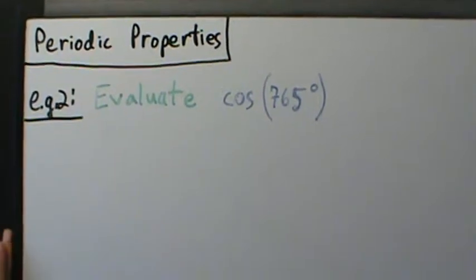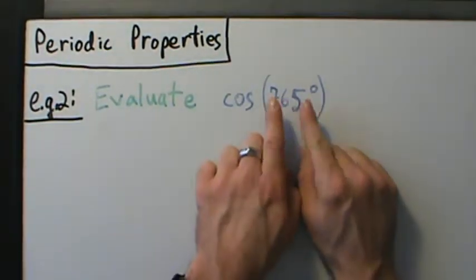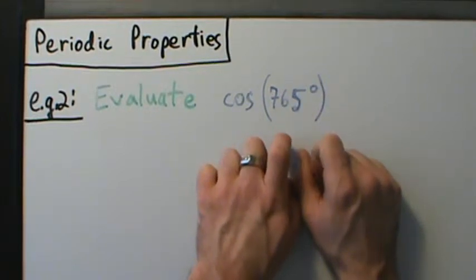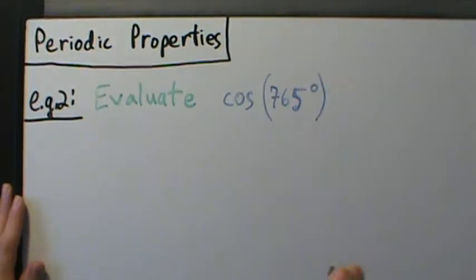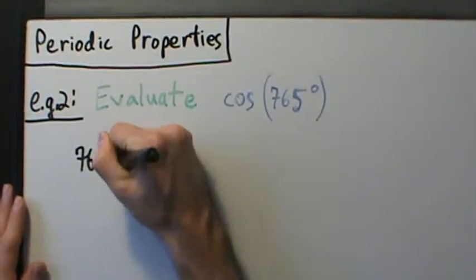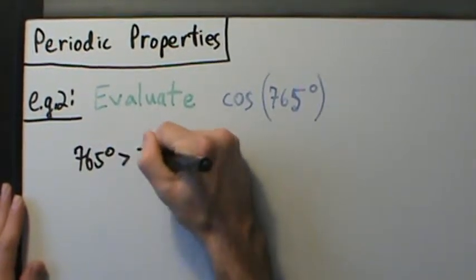So what we have to do first is ask ourselves, is this angle larger than 360 degrees, or is it smaller than 0 degrees? Well, clearly it's larger than 360 degrees, right? So what we say then is 765 degrees is larger than 360 degrees.